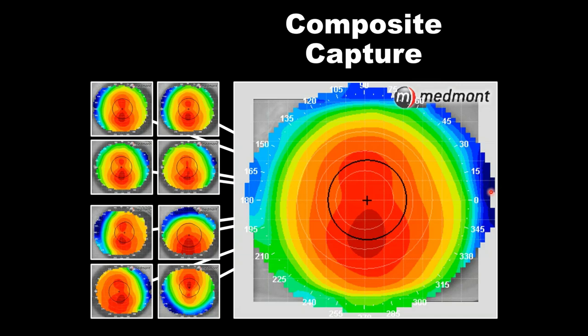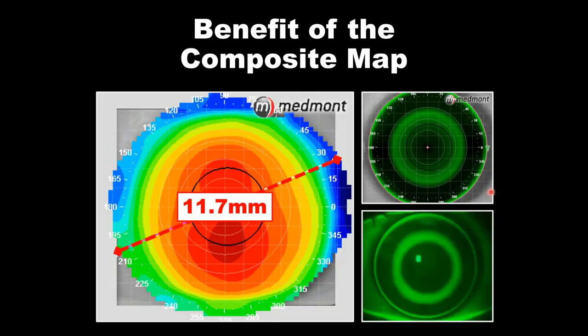Should you do this for every patient? No, you don't want to do this capture on everyone. You don't want to do it on a screening topography — if you're just trying to understand the general eye shape, is it a normal cornea, is it astigmatic, is it diseased? But if you're trying to build an ortho-K lens, a scleral lens, a corneal GP for presbyopia, or any kind of specialty contact lens, then you want as many data points as possible. Orthokeratology is a great example where a lens has to be micron accurate, so we want this topography to be as accurate as it possibly can.